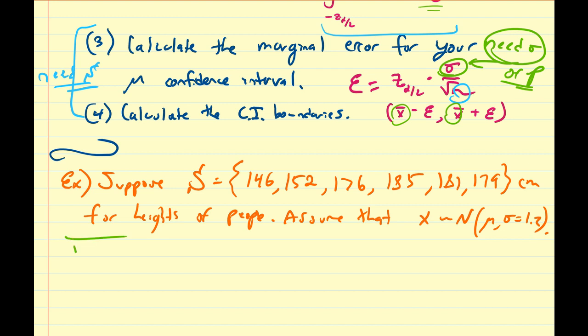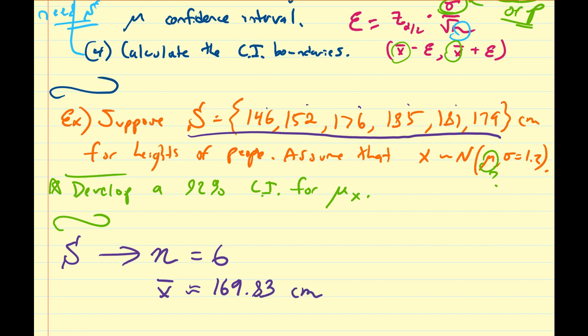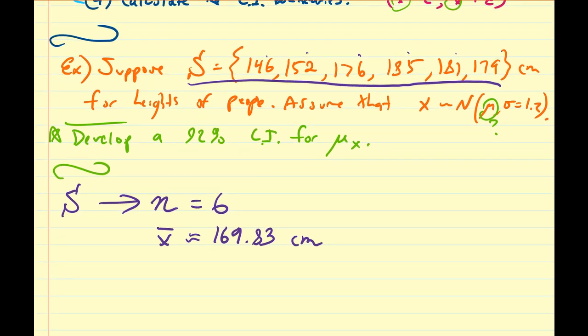So what we want to do is develop, because we don't know what mu is, we're going to develop a 92% confidence interval for the population mean mu. So this is our goal. How are we going to do that? First off, let's analyze this sample that we have here. I have six values. So from our sample, we have that the sample size n is equal to six, which is relatively small, but it might be useful. And I leave to you to find that the sample mean for this value is approximately equal to 169.83 centimeters. You can use Excel to calculate that if you desire. We could also calculate the standard deviation of the sample, but we don't need it in this case.